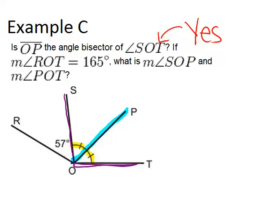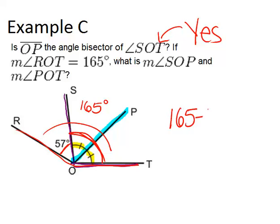If the measure of angle ROT equals 165, so let's find that. ROT is the whole big angle. So this whole thing is 165 degrees. And we actually already have that this over here is 57. What is the measure of angle SOP and POT? So if the whole thing is 165 and this is 57, I can first figure out the rest of this right here by doing 165 minus 57, which gives me 108. So now I know that this whole thing is 108. And since it was an angle bisector of OP, each of these angles is congruent. So I divide 108 by 2 and get 54 degrees for each of those angles.